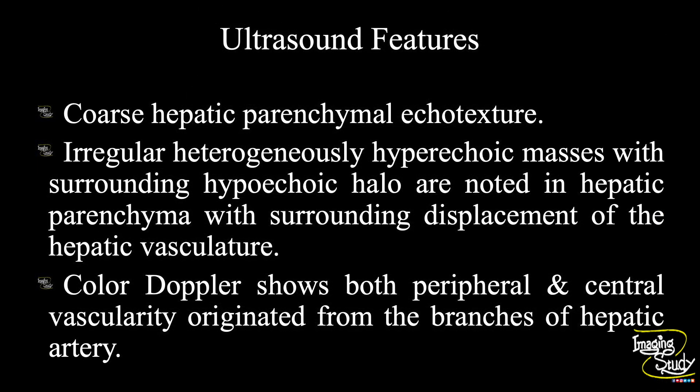In summary, hepatic parenchyma echo texture is coarse. Irregular heterogeneously hyperechoic masses with central necrosis and surrounding hypoechoic halo are noted in the hepatic parenchyma, with surrounding displacement of the normal hepatic vasculature. Color Doppler shows both peripheral and central vascularity originated from branches of the hepatic artery. These features suggest a case of hepatocellular carcinoma on the background of chronic liver disease.